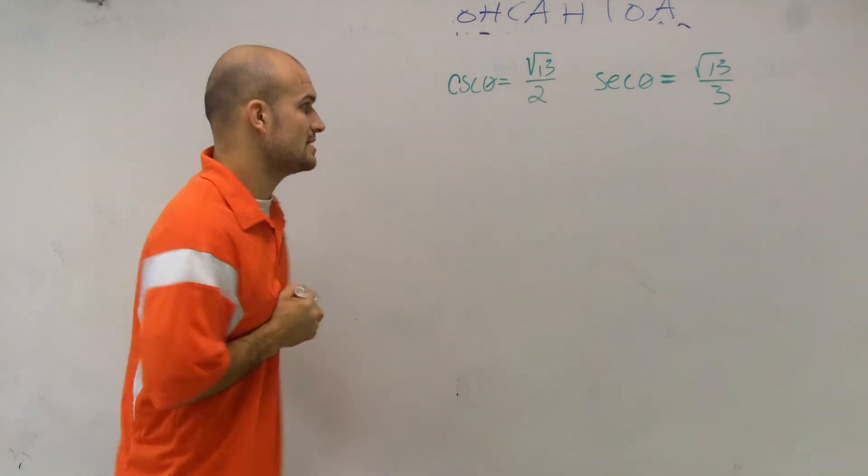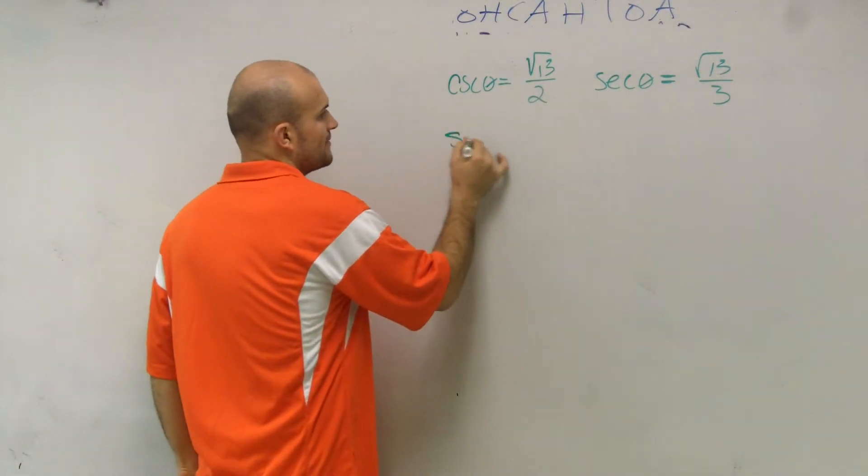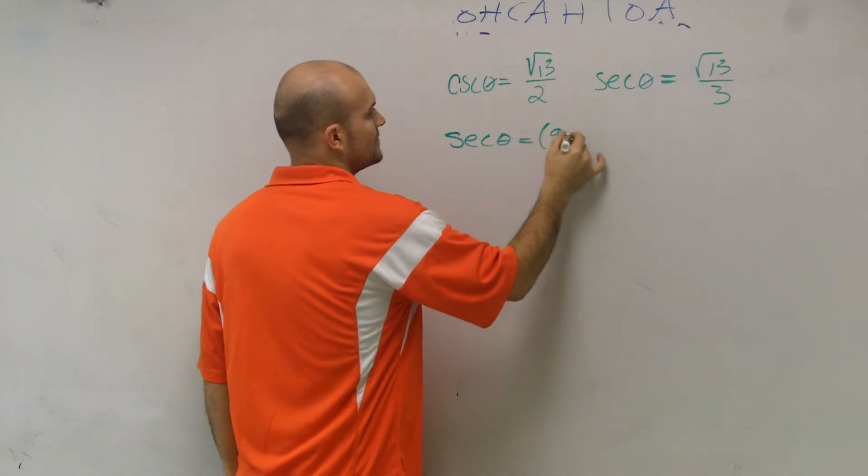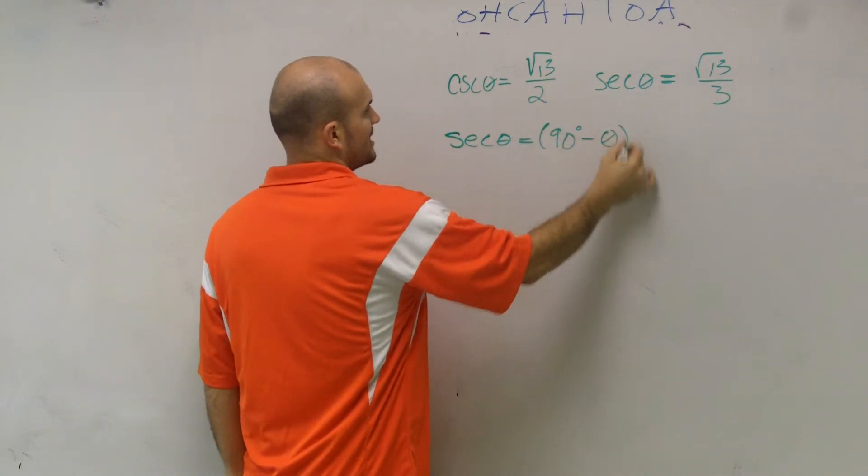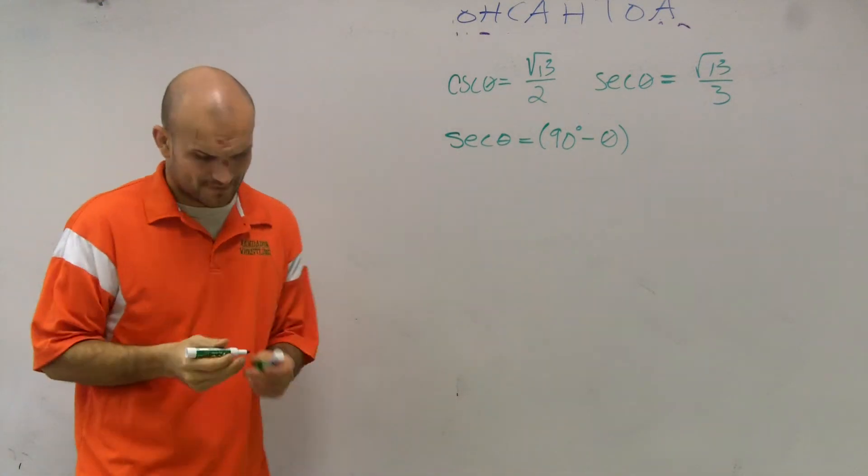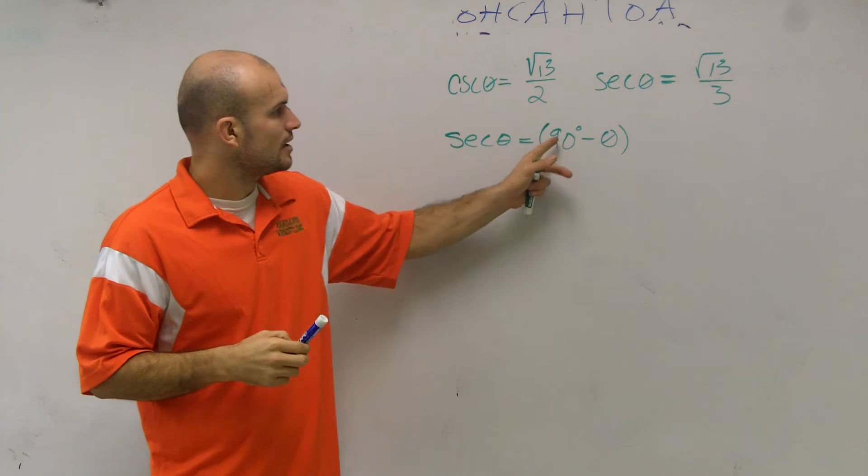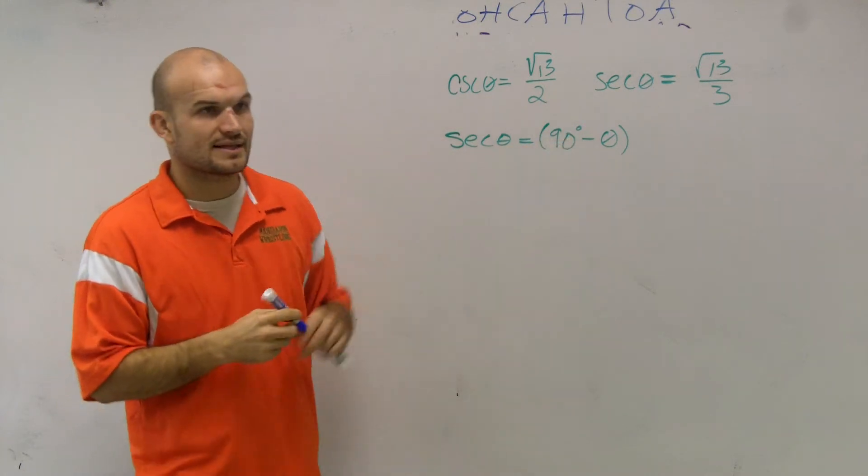We are given these two identities. Then they ask us, given these identities, what is secant of 90 minus theta? Well, I need to remember what secant of 90 degrees minus theta equals.